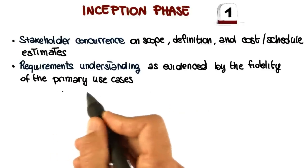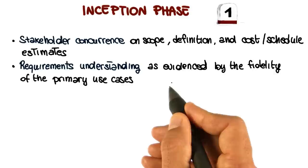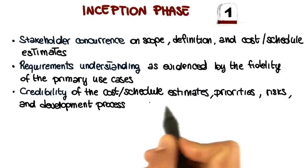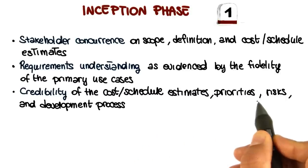The second criterion is requirements understanding. Are the initial, the primary use cases that we have identified so far, the right ones for our system? Another criterion is the credibility of the cost schedule estimates, the priorities defined,